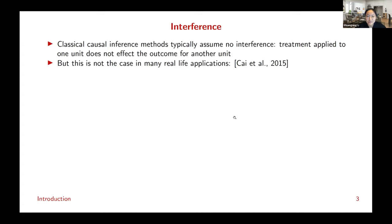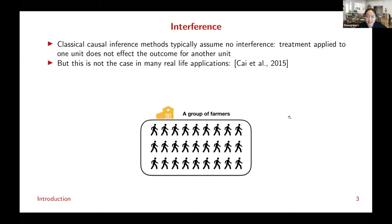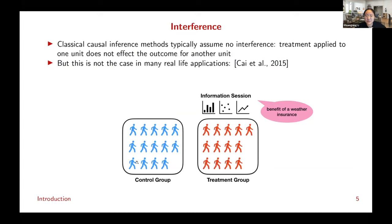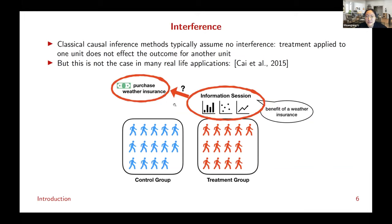Here I borrow one simple application from Tsai 2015. In this example, we have a group of farmers, and we toss a coin to decide whether to put a farmer into the treatment group or the control group. For people in the treatment group, we give them an information session about the benefits of weather insurance. The goal is to see what is the effect of this information session on farmers' financial decision on whether they'll purchase the weather insurance.